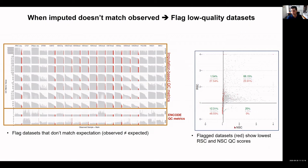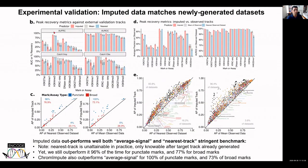Using independent experimental data generated after our imputations, we validated that the predicted datasets are very high quality, surpassing the stringent benchmark of the nearest-track comparison. The nearest-track imputation means choosing the closest observed dataset — an unrealistic upper bound since it requires observing the data. Remarkably, imputation without knowing the observed track does better in 77% of cases for broad marks and in 96% of cases for punctate marks.